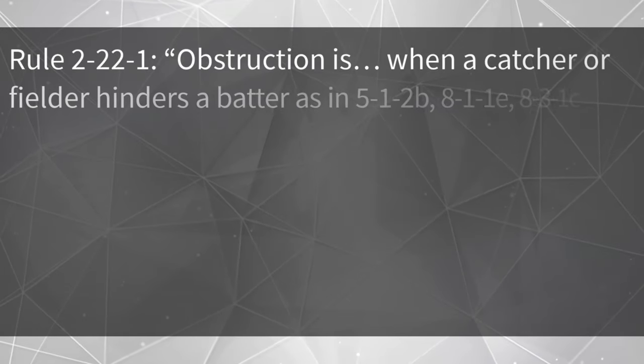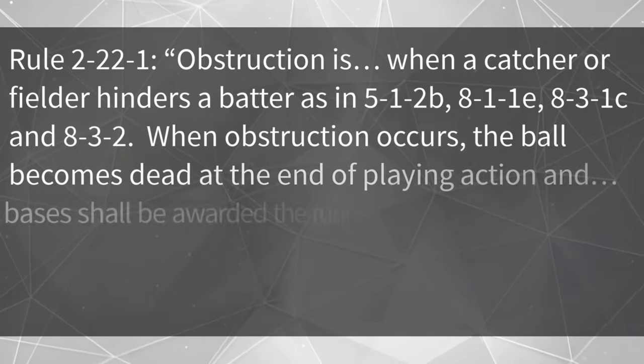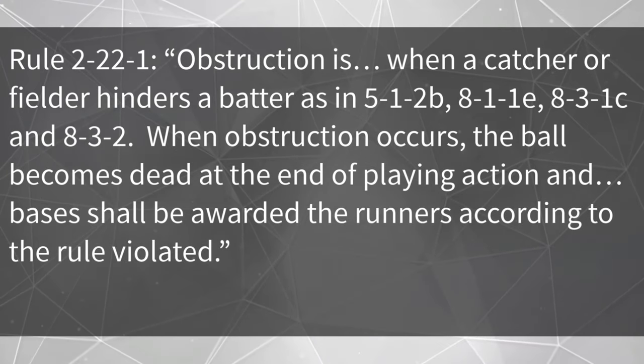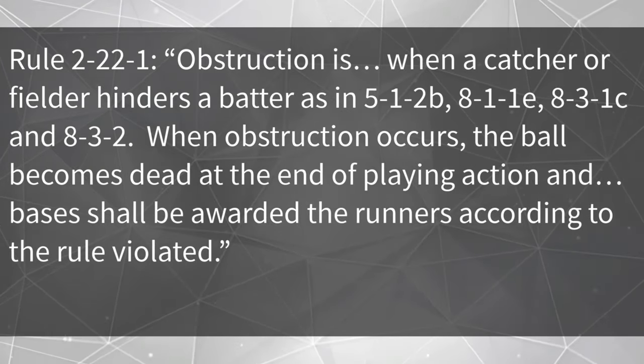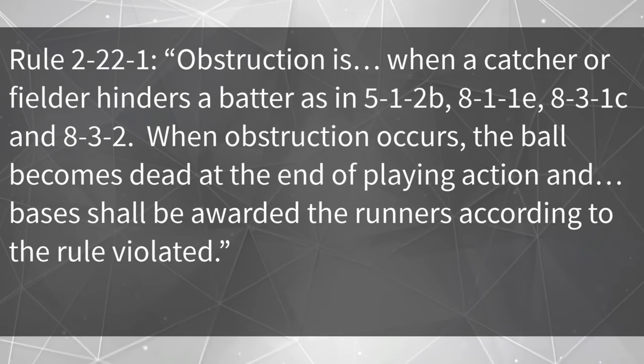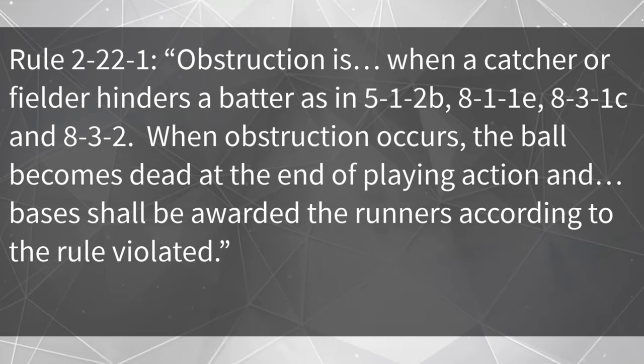Let's start by reviewing what is catcher's obstruction by looking at the definition of obstruction. Rule 2-22-1: obstruction is when a catcher or fielder hinders a batter. When obstruction occurs, the ball becomes dead at the end of playing action, and bases shall be awarded to runners according to the rule violated. The definition doesn't necessarily use the term catcher's obstruction, but our key for understanding this rule is that we're looking to enforce obstruction on the batter and not on a runner.